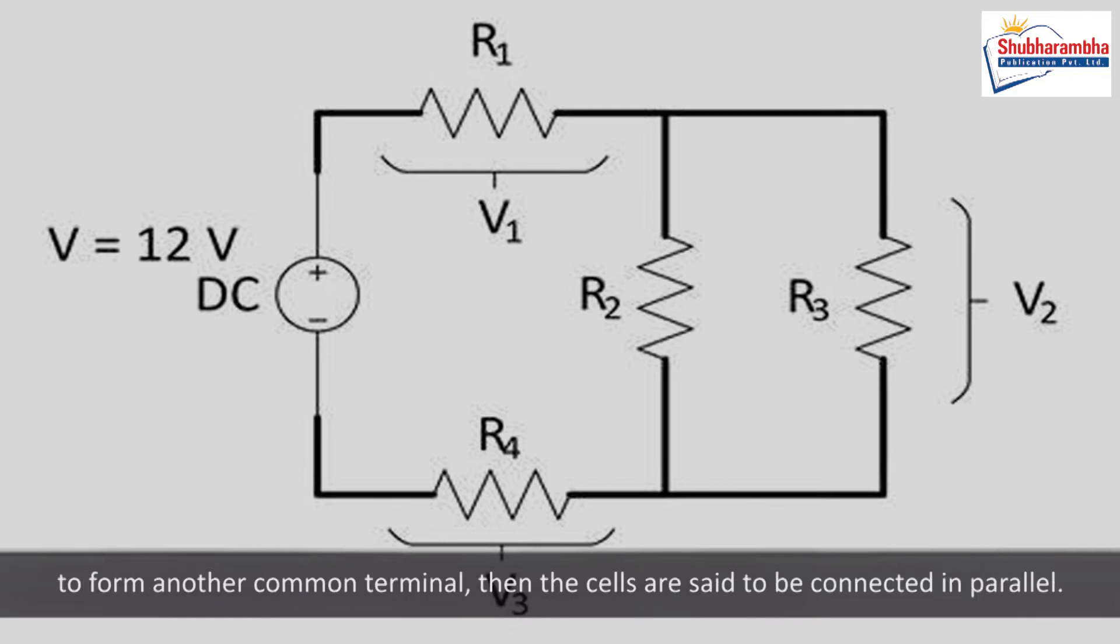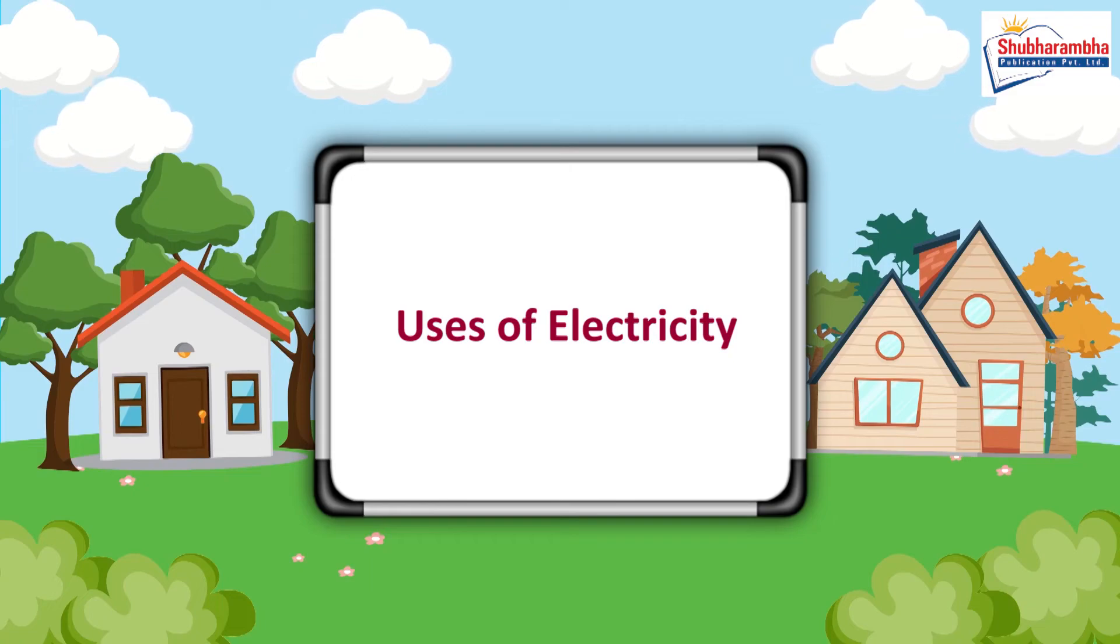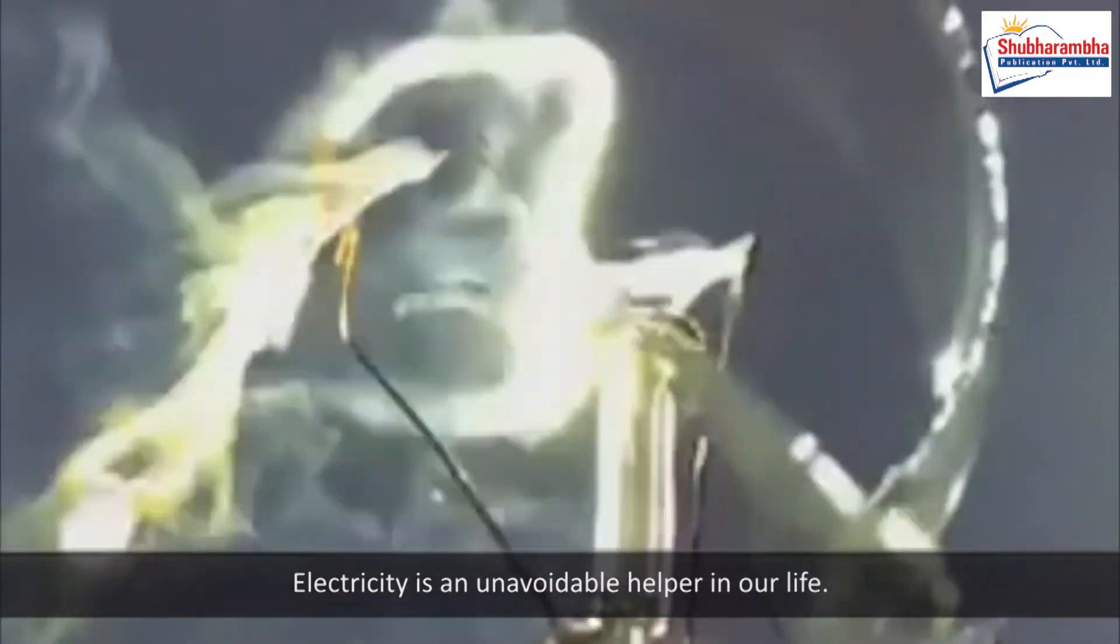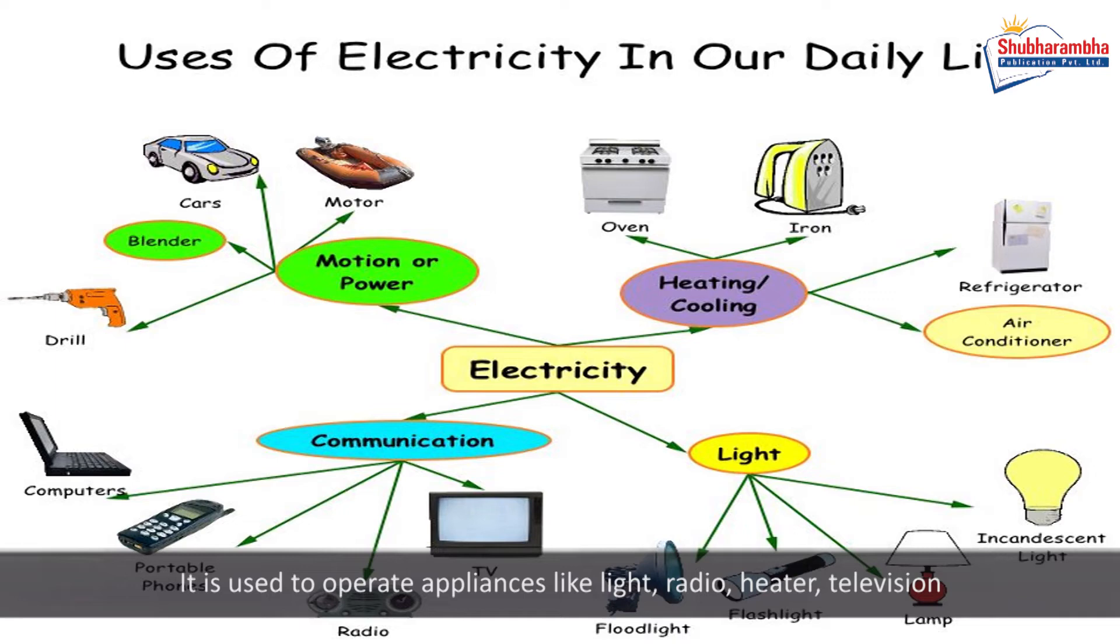Uses of electricity: Electricity is an unavoidable helper in our life. It is used to operate appliances like light, radio, heater, television, fan, devices of communication, and materials of entertainment. Imagine the condition of load shedding.